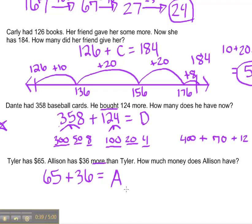I'm going to use the variable A to stand for how much Allison will have in total. Now, in order to solve this, I'm simply going to add my numbers together. But you might be asking yourself, what is the difference between problem type 3 and problem type 4?